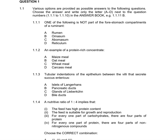Question 1.1.2 asks for an example of a protein-rich concentrate. We first look at carbohydrate-rich feeds: maize is high in energy, oat, and wheat — these are the carbohydrate-rich concentrates.